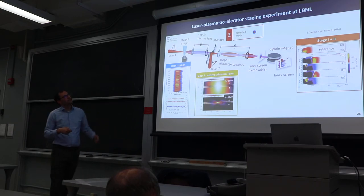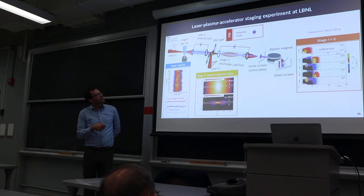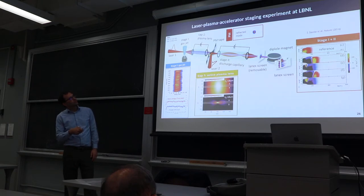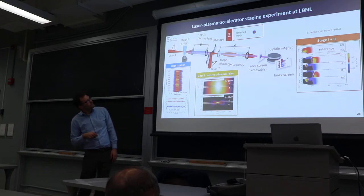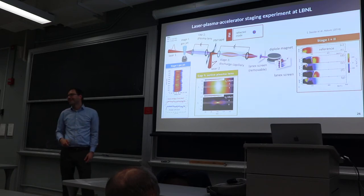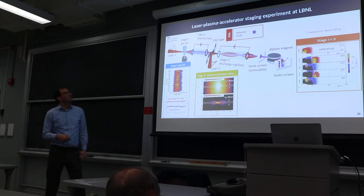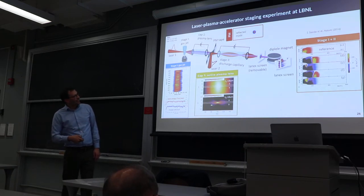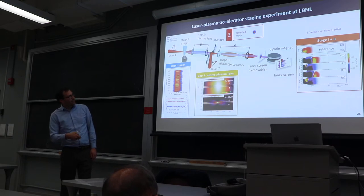We actually use a plasma mirror—the laser pulse comes in and ionizes the surface of this tape, creating an overdense plasma which reflects the laser pulse. If you time it correctly, you can put it into a phase that's accelerating this beam. We actually use VHS tape to do this because there's a lot of VHS tape flying around and no one needs it anymore.